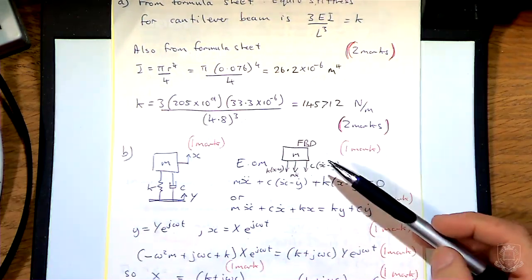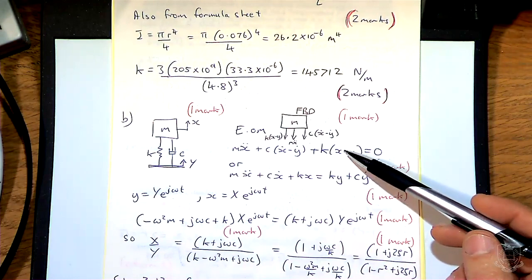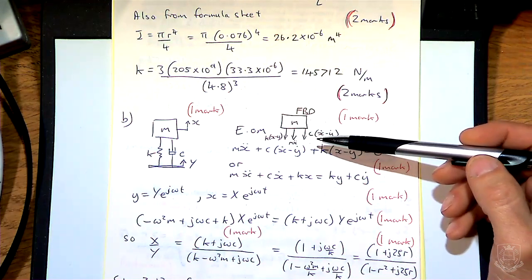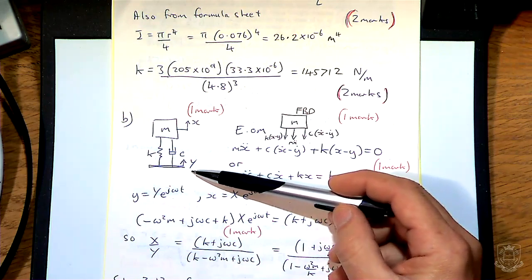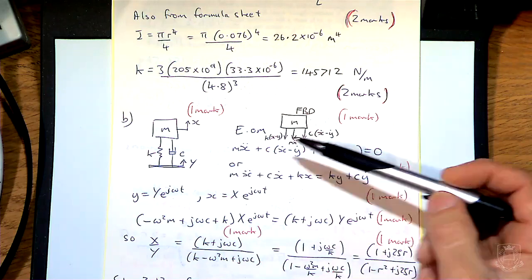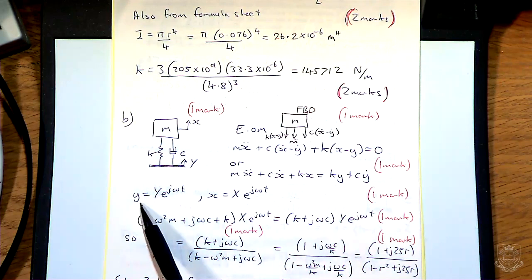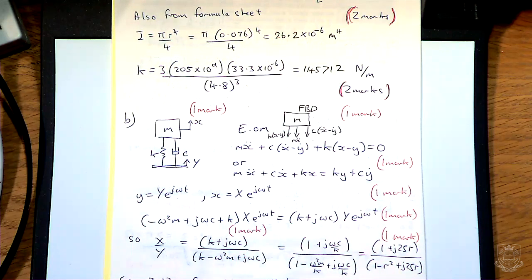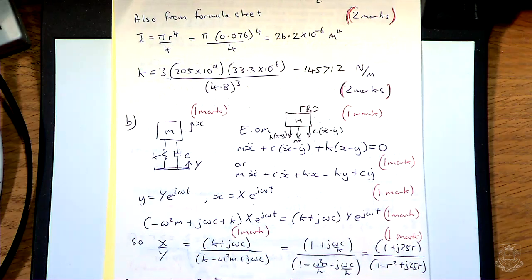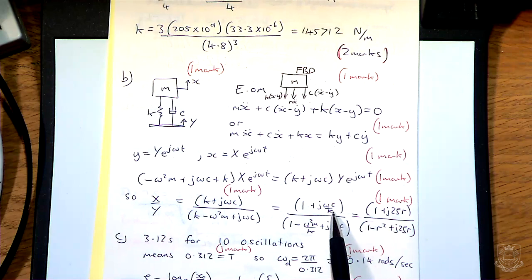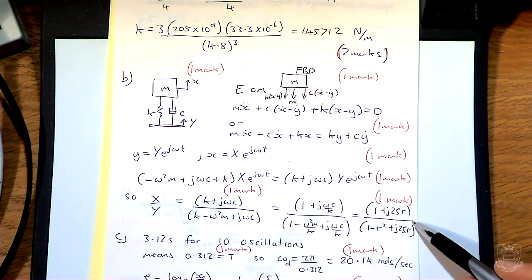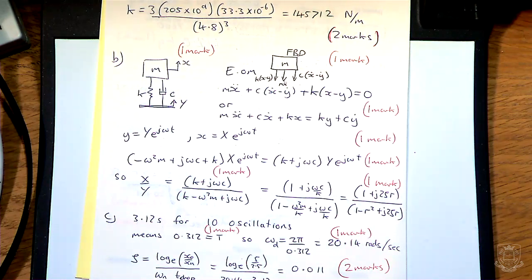The second part — deriving the transmissibility expression — is not as straightforward. The transmissibility expression is for when the support input is given and the forcing comes from moving the base. You do a free body diagram and write down the initial equations, then make an assumed solution that these are sine waves in the form of exponentials. Plug those in — the exponential time-dependent part divides out — and you end up with X over Y. Dividing all terms by K, top and bottom, proves that this equals what's given in the question.